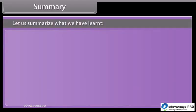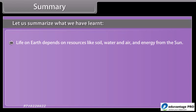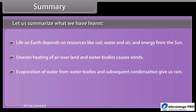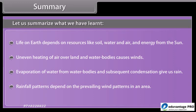Let us summarize what we have learned. Life on Earth depends on resources like soil, water and air, and the energy from the sun. Uneven heating of air over land and water bodies causes winds. Evaporation of water from water bodies and subsequent condensation give us rain. Rainfall patterns depend on the prevailing wind patterns in an area.